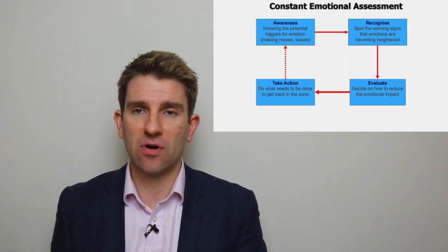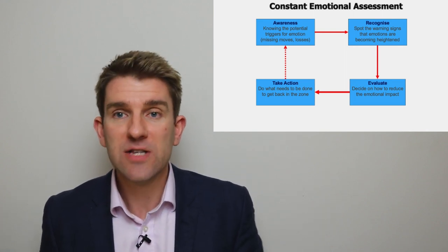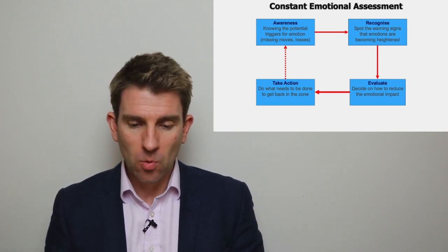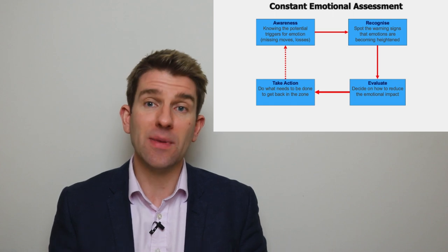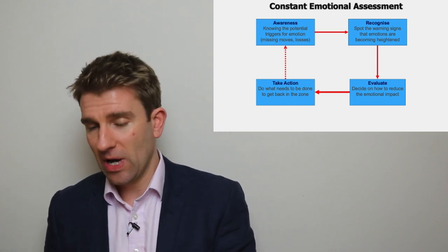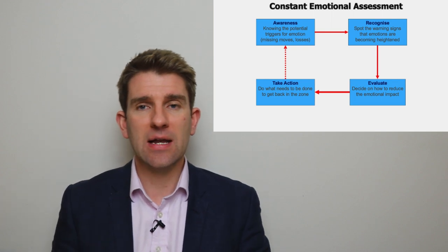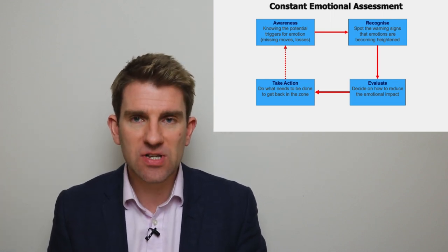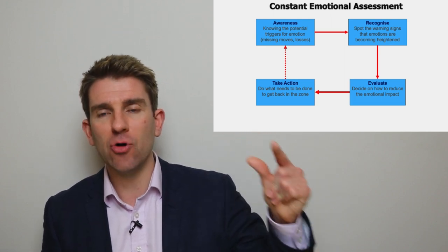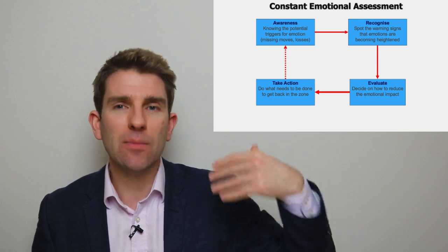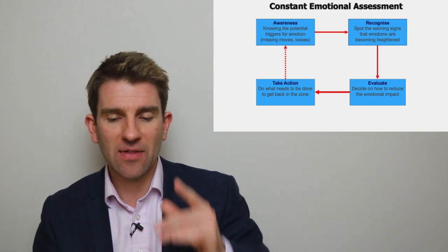Constant emotional assessment—if we look at this as a permanent loop, we start with awareness. We need to know what are the potential triggers for emotion. Is it when you miss moves, have a string of losers or winners, come to the screen late? There's always going to be something that triggers that emotion and gives it more clout over decision-making than you'd like.